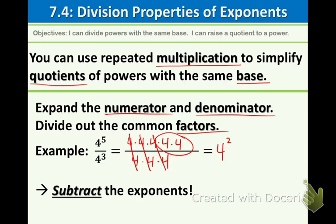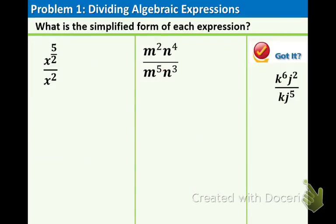you do not have to expand all the time. This is just to show you where the shortcut comes from. The shortcut is simply subtract the exponents. So 4 to the 5 minus 3 equals 4 to the 2nd. So subtract the exponents is really important. To divide powers with the same base, we are going to subtract the exponents.